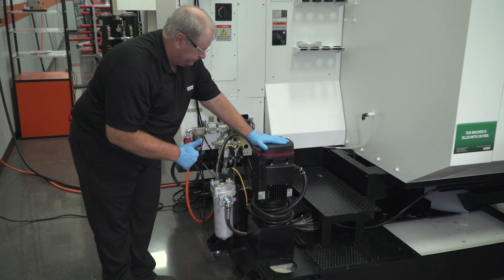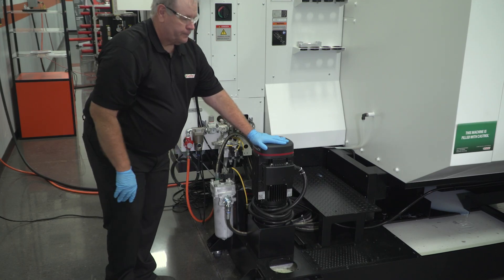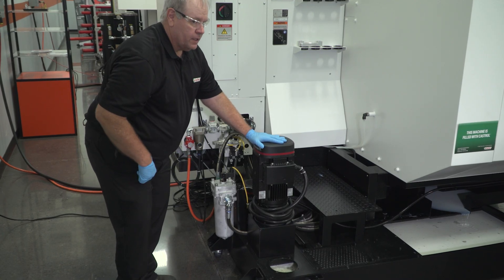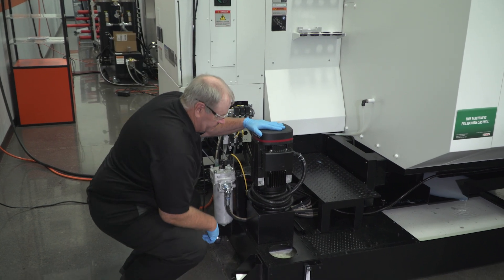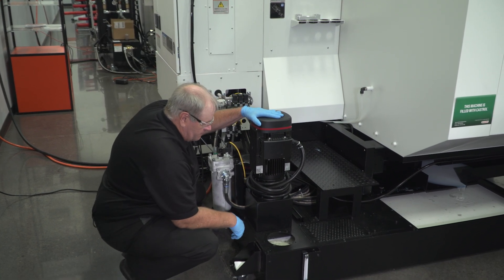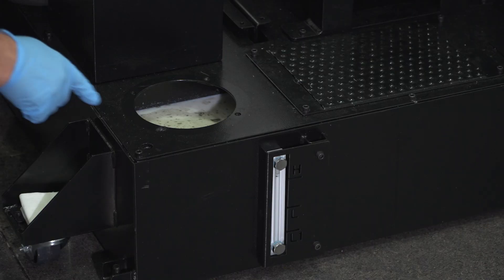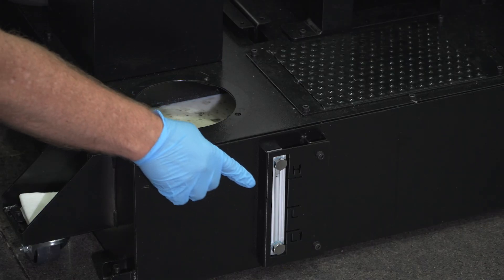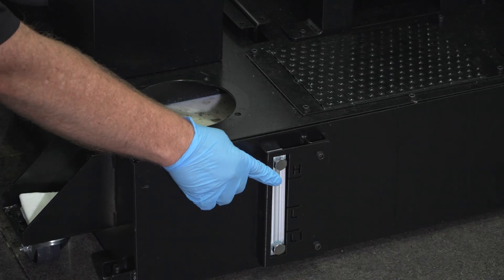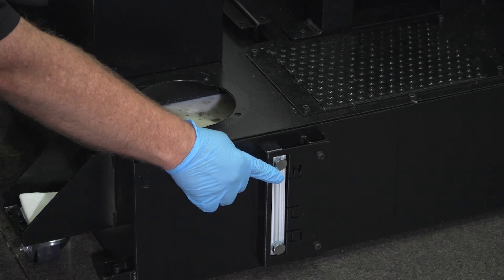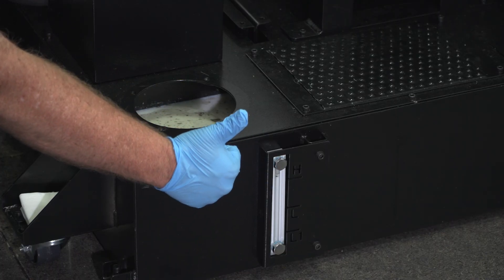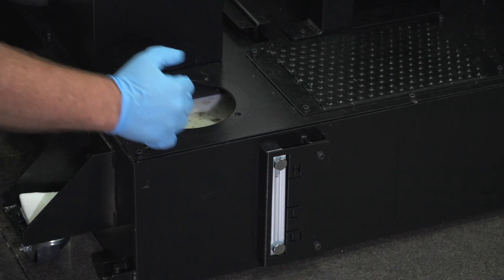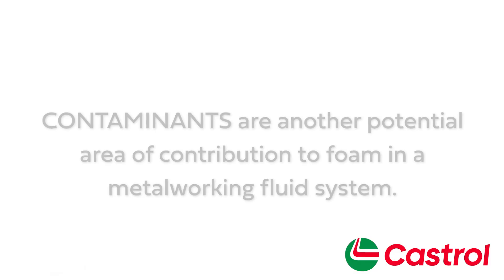Cavitation of a pump can occur when a sump fluid level is low and air gets pulled into the pump. Maintaining the proper level of metalworking fluid in the sump or lowering the pump intake can resolve this issue.